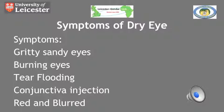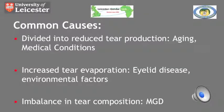Here are some of the symptoms of dry eye. Common causes of dry eye can be divided into three separate categories: increased tear production, increased tear evaporation, and imbalanced tear composition. Increased tear production is often caused by ageing and medical conditions such as rheumatoid arthritis, diabetes, lupus, scleroderma, and Sjögren's.